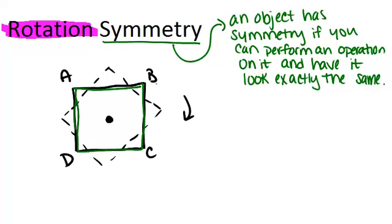The only difference is point A will now be over here at A prime, point B will be over here at B prime, C will be over here at C prime, and D will be over here at D prime. But besides the letters changing positions, the square looks exactly the same. So a square is an example of a shape that has rotation symmetry because you can rotate it 90 degrees and it will look exactly the same.